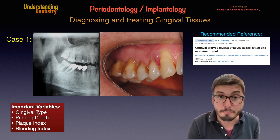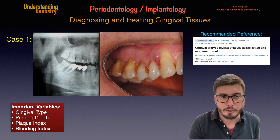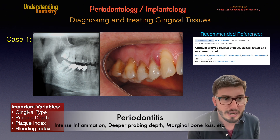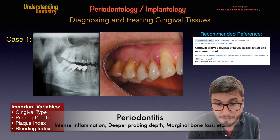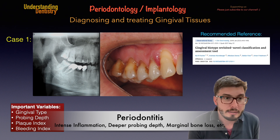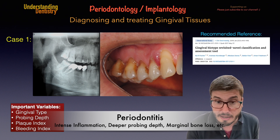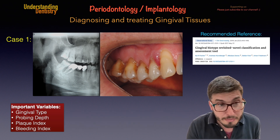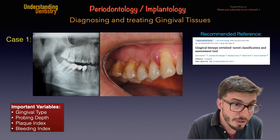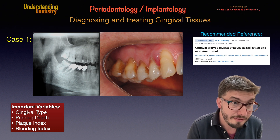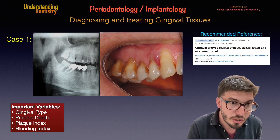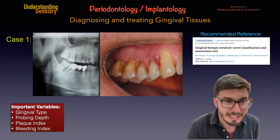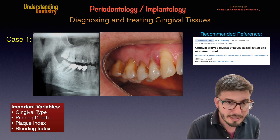When we have bone loss associated, the diagnosis is periodontitis, because we are also losing the level of the alveolar crest bone — the marginal level of the bone surrounding the tooth. As we can see in this OPG panoramic radiograph, the three molars here have decreased levels of marginal bone. This would be classified as periodontitis, and the patient needs treatment.